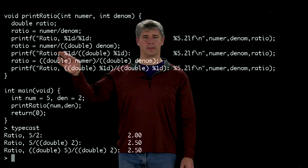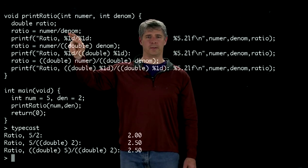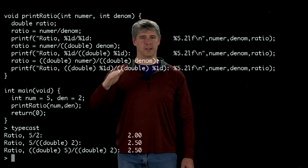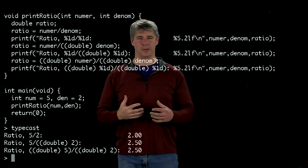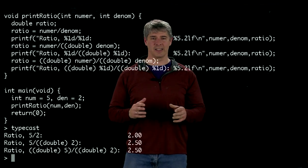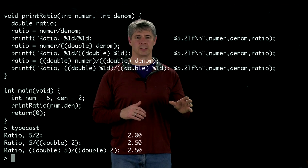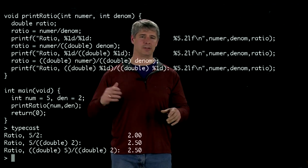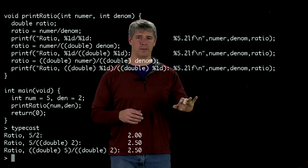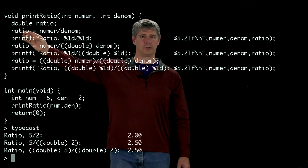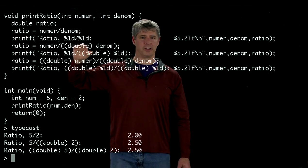If we take a look at the first time we do the division right up here, numerator divided by denominator, we know that numer and denom are both type integers. When the division sign sees that you're dividing two integers, it thinks that you want to stay with integers, so it's going to drop any fractional component. Five divided by two is 2.5. It drops the 0.5, so it's going to assign that value of two to ratio, and then we just print out that value.